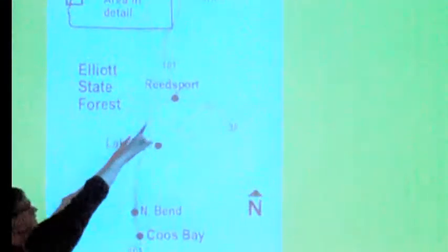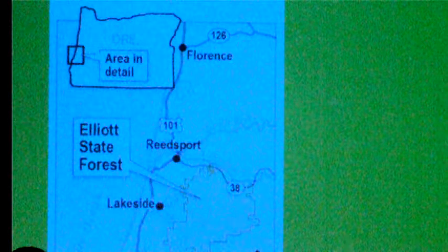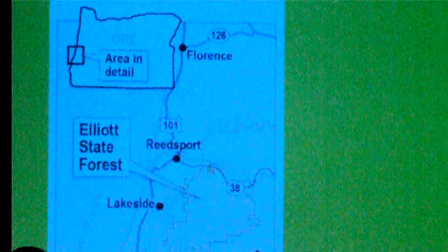Now I'm going to show you a picture. This is a map of where the Elliott State Forest is on the Oregon coast. Here's Coos Bay, this is where I live, and that's Reedsport. Between Coos Bay and Reedsport is about 25 miles. You can see there in green is the Elliott State Forest.